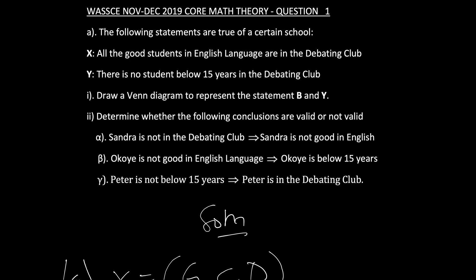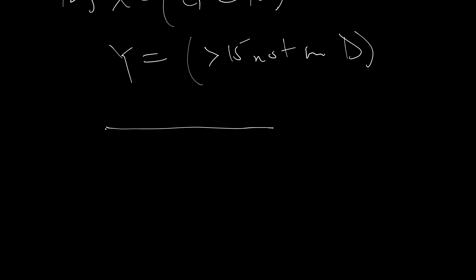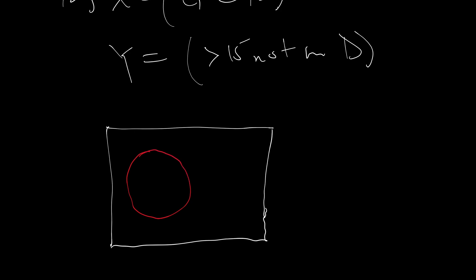We've been asked to represent this on a Venn diagram. So we have our big circle, then we have our X and our Y. The red circle represents all students in the debating class, and this represents all students that are below 15 and not in the debating class. The blue triangle represents all students good in English. So this will be it when we represent the information on a Venn diagram.